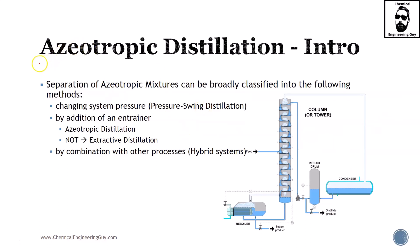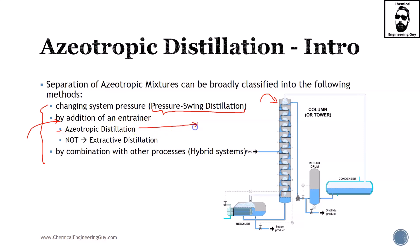And that something is the main point of this lecture. We can still use distillation in such cases, and there are three main categories. First, changing the system pressure — we have been talking about pressure-swing distillation, but this does not necessarily require two pressure columns; you can do this by changing a single column's operating pressure. Also, one of the most common approaches is the addition of an entrainer, which gives us azeotropic distillation — the main focus of this lecture.